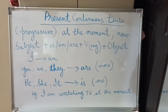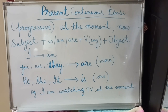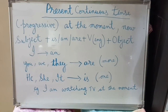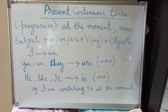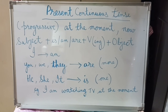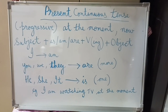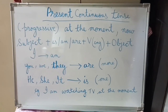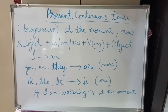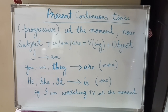Look at the board carefully. You can see that I have written 'at the moment' and 'now.' These are the signal words of this tense — 'at the moment' and 'now.'